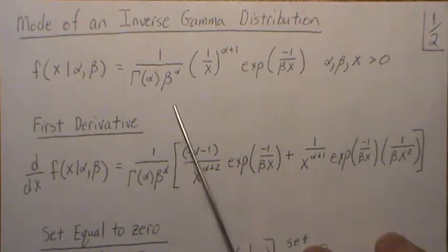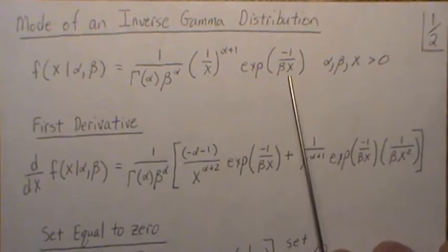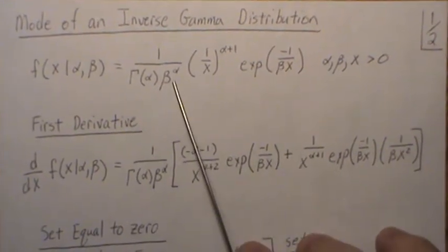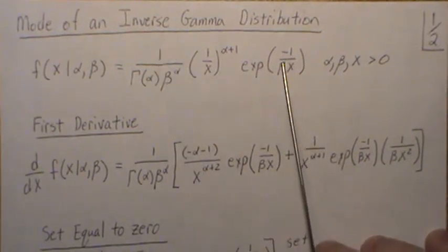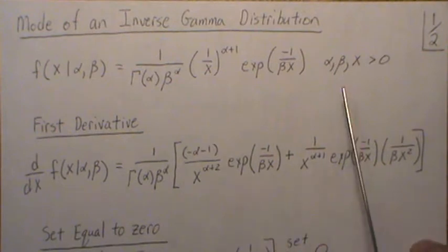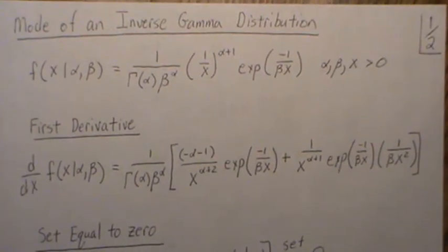So this is the density for an inverse gamma distribution, and one note here is that the beta parameters are in the denominator. Some people like to put them in the numerator, and both are 100% equivalent representations of an inverse gamma distribution.